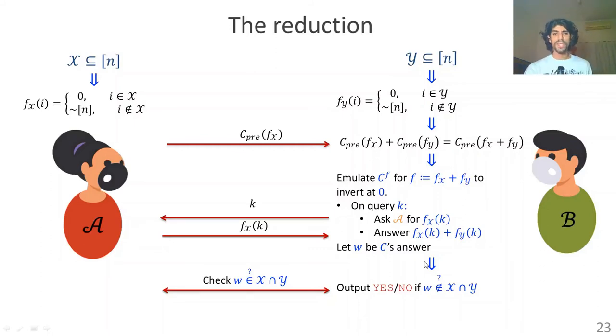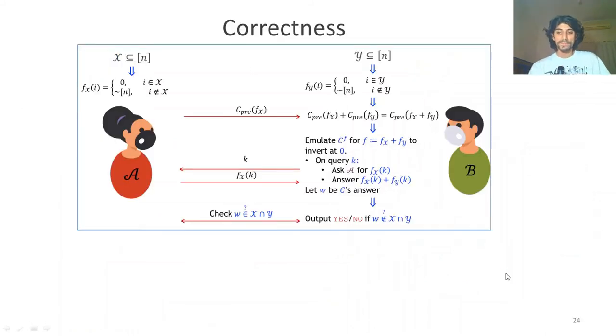The next step: Bob takes our inverter C and emulates it and tries to invert the new function f, which is the sum of both individual functions, at the value 0. While Bob is running this inversion algorithm, every time he receives a query from the algorithm, he asks Alice. Alice replies with her own value, Bob adds it to his own f_y of k, which by definition equals f of k, and feeds it back to the algorithm. Eventually, the algorithm finishes and outputs a value w. Bob communicates w to Alice, and they both check whether w exists in the intersection between both sets. If it does exist in the intersection, they say the sets are not disjoint. If it's not in the intersection, they say the sets are disjoint.